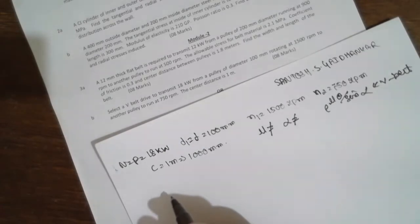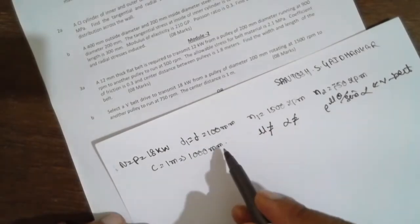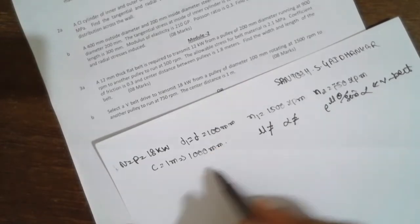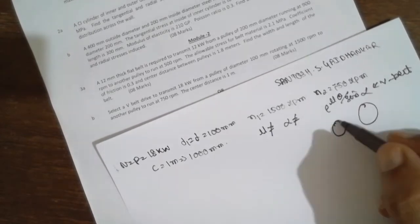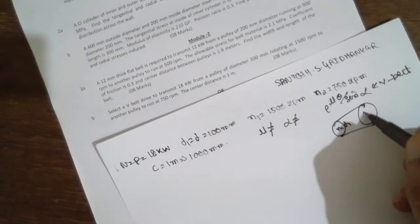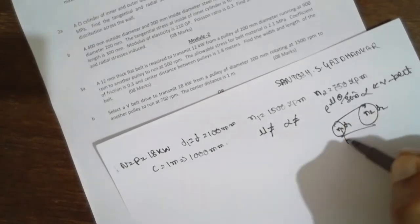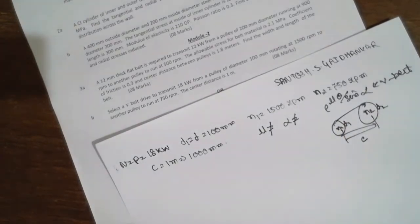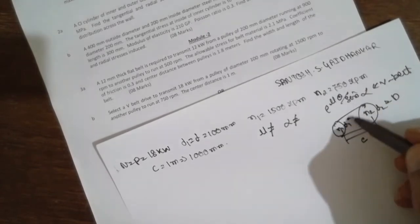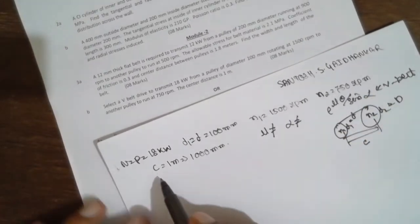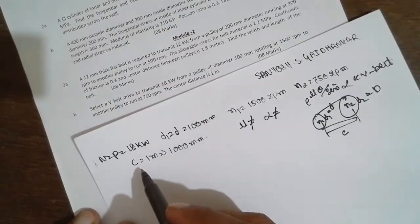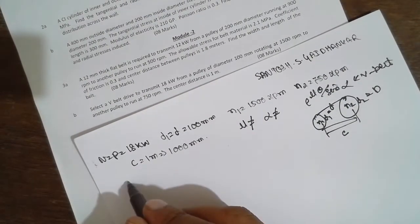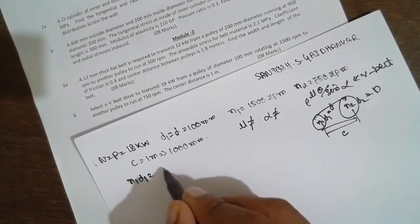These are the parameters given. This is the smaller pulley and larger pulley. I will consider this as N1, D1 (small d), N2, D2 (large D), and this is the center distance C. Now first I will find D2 using N1·D1 = N2·D2.